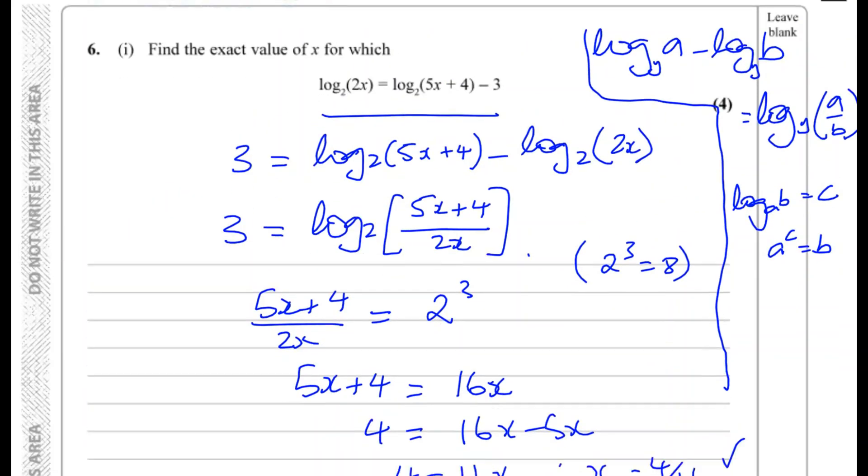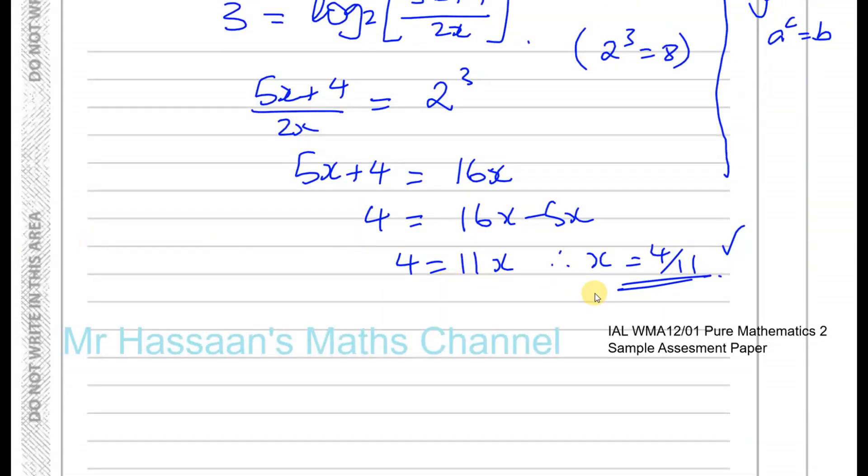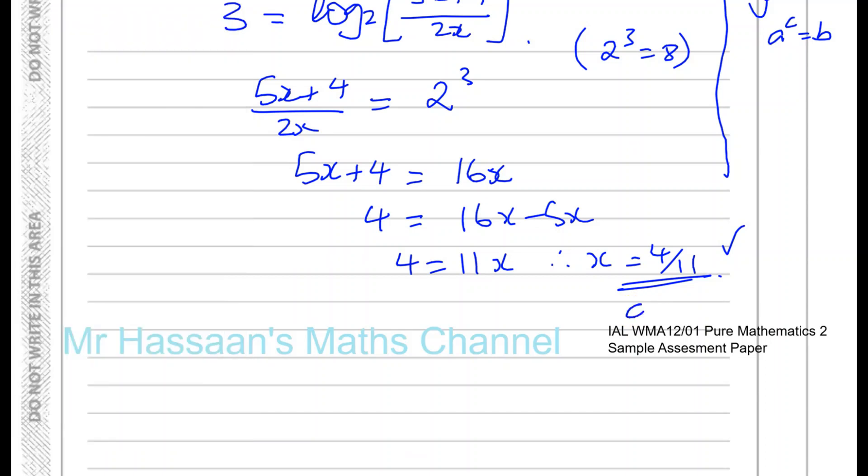And it says find the exact value. So we don't want to round that or write it as a decimal. If you wanted to, actually, 4 over 11, I think it becomes a recurring decimal. 4 divided by 11, it's going to give you 0.363636. If you wanted to write it as 0.36 with a dot in both of these to show that that repeats, you could. That's also exact value. But generally when they say exact value, what they mean is an exact fraction, not as a decimal. Or in terms of pi or whatever.